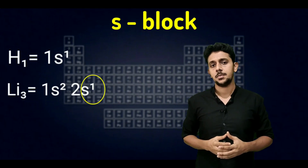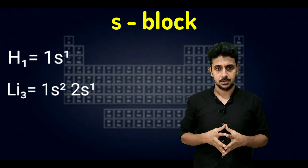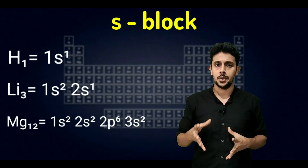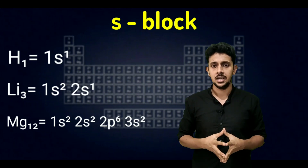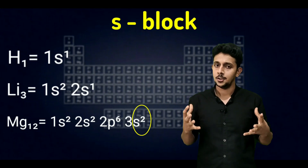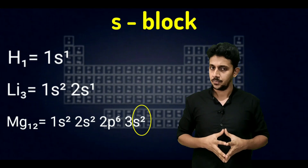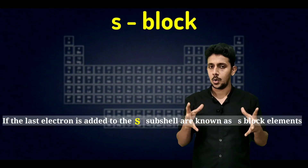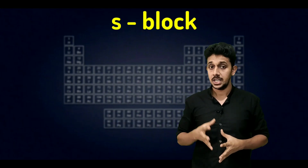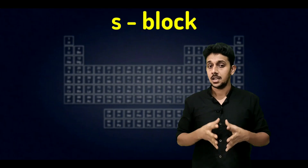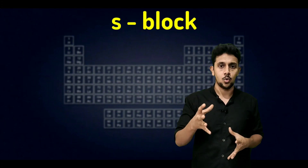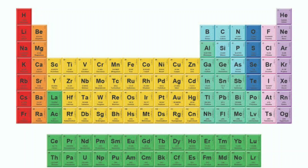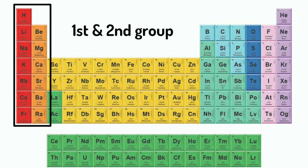So hydrogen and lithium are s-block elements. Look at another example: magnesium, atomic number twelve, configuration is 1s2 2s2 2p6 3s2. The last electron is added to the s sub-shell, so it is also an s-block element. In the periodic table, the first and second group elements are s-block elements because their last electron is added to the s sub-shell.